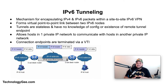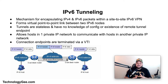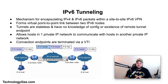IPv6 tunneling is a mechanism for encapsulating IPv4 and IPv6 packets within a site-to-site IPv6 VPN. It is used to form a virtual point-to-point link between IPv6 nodes. IPv6 tunnels are stateless and have no knowledge of the configuration or existence of the remote tunnel endpoint — once configured, packets are encapsulated and forwarded regardless of whether the decapsulating device is present. IPv6 tunneling allows hosts in one private IP network to communicate with hosts in another by providing a tunnel between two routers across the internet, with endpoints terminated via a virtual tunnel interface (VTI).